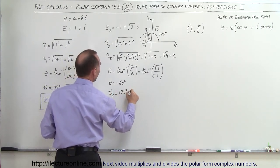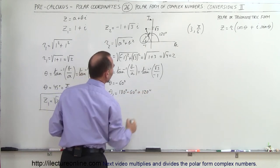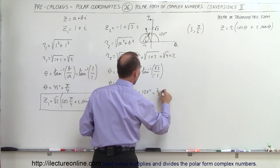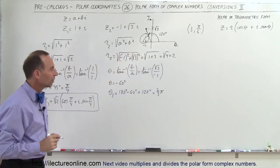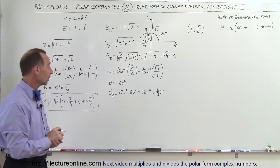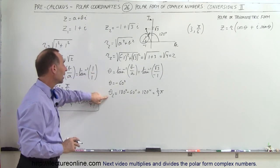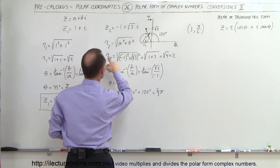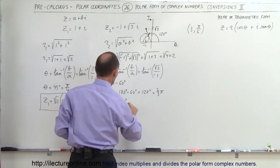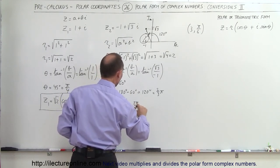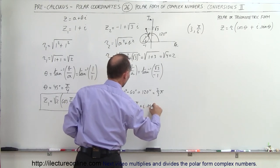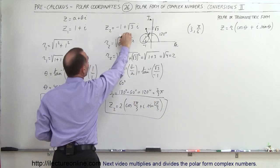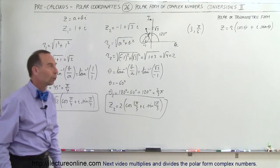Since the point is in the second quadrant, the correct angle is 180 degrees minus 60 degrees, which equals 120 degrees. In radians, 120 degrees equals 2π over 3. Now that we have r equals 2 and theta equals 2π/3, we can write z2 equals 2 times the quantity cosine of 2π over 3 plus i times sine of 2π over 3. That is the polar trigonometric form of the second complex number.